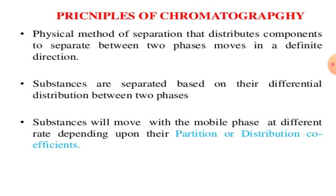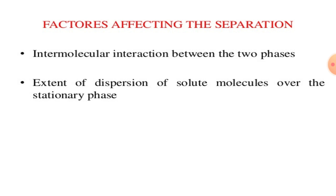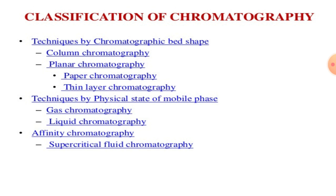Chromatography is a physical method of separation that distributes components between two phases moving in a definite direction. Substances are separated based on their differential distribution between the two phases, moving with the mobile phase at different rates depending on their partition or distribution coefficients. Factors affecting separation are: intermolecular interactions between the two phases, and the extent of dispersion of solute molecules over the stationary phase.